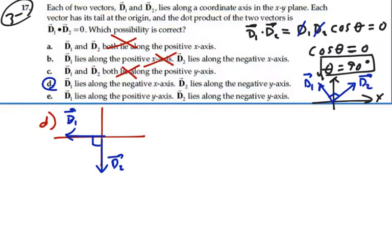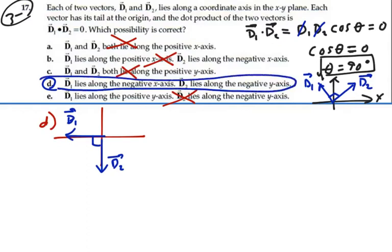d1 lies along the positive x-axis, d2 lies along the negative x-axis. That's 180 degrees between the two vectors, not going to work. So our only answer is answer d.